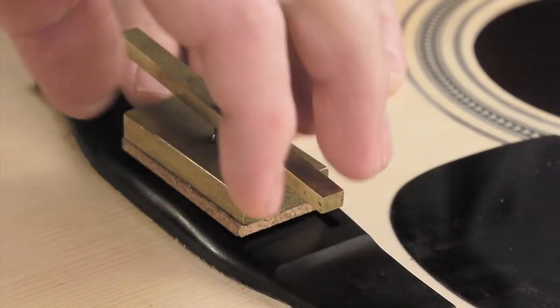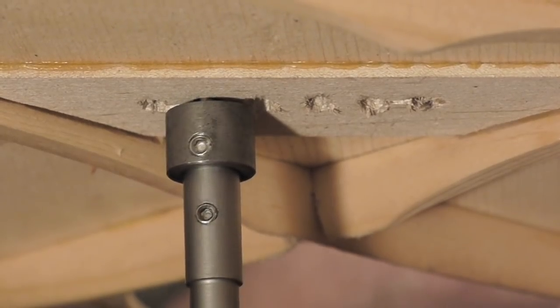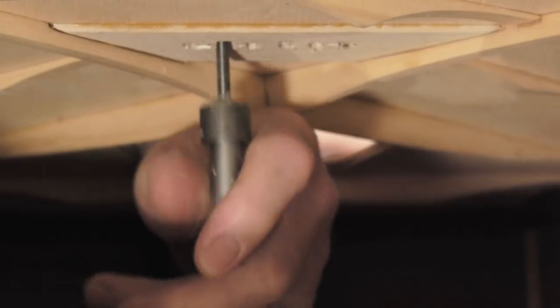Turning the handle clockwise causes the cutter to pull up into the bridge plate, and it produces a smooth chip-free dish.